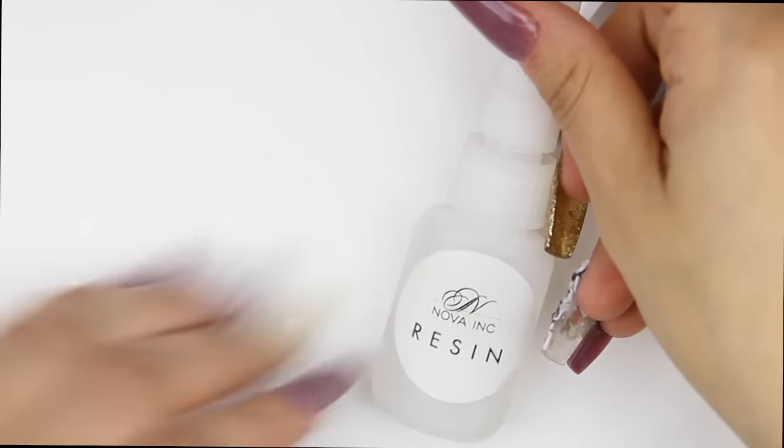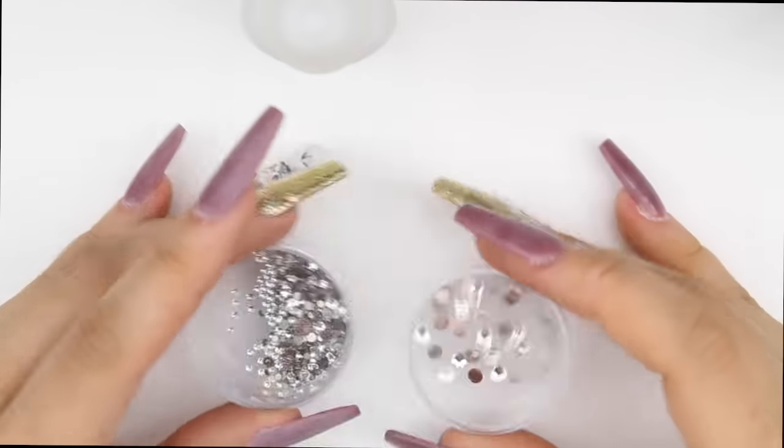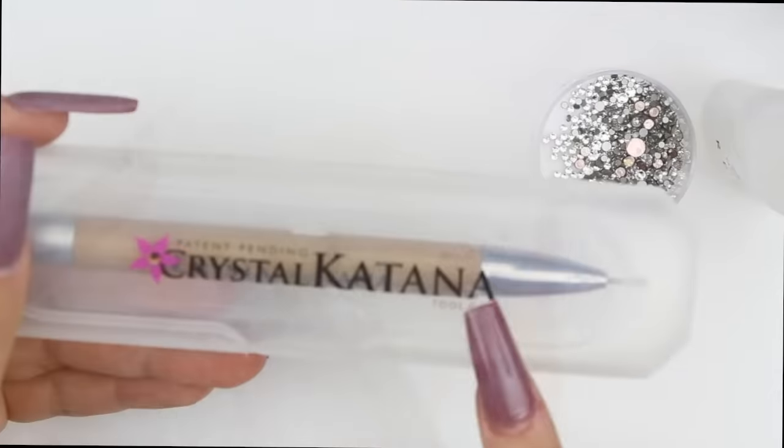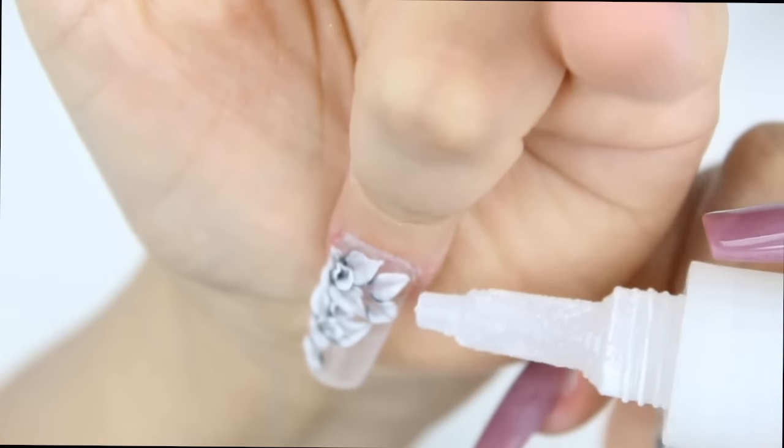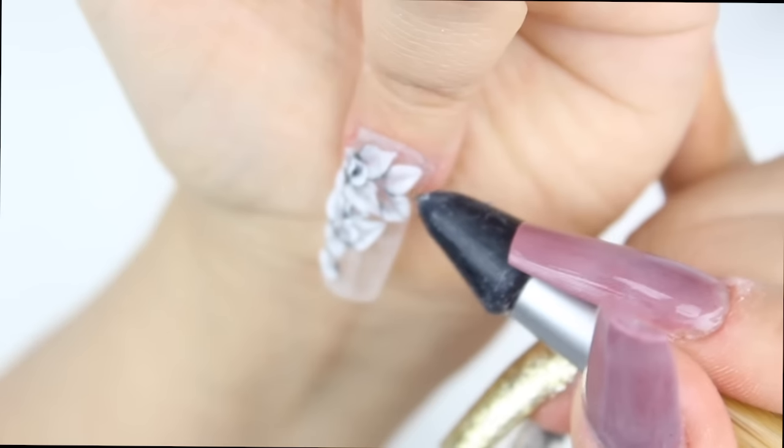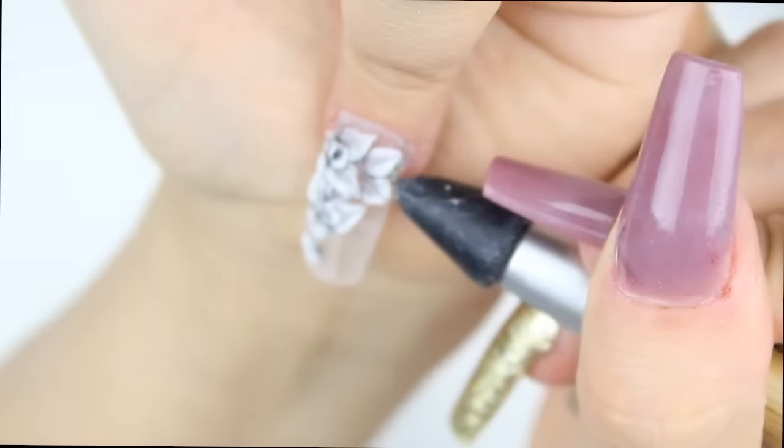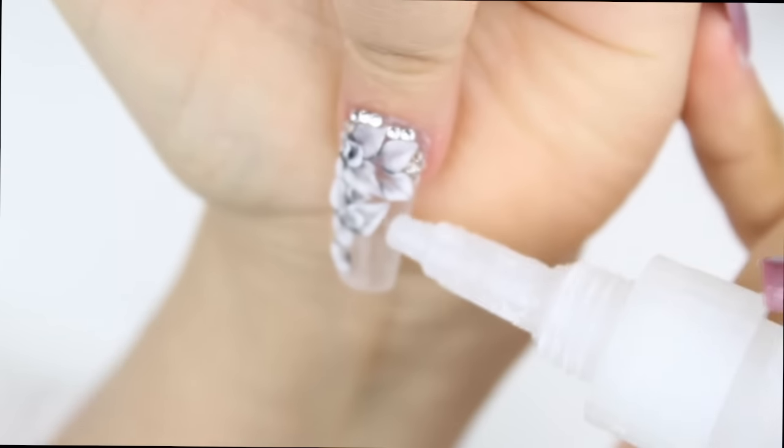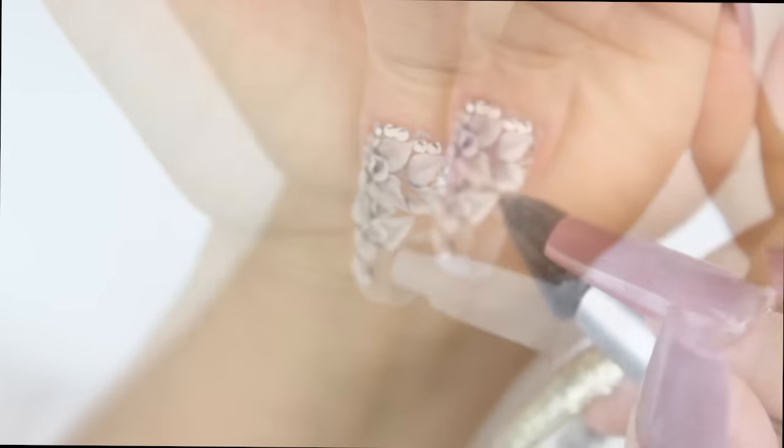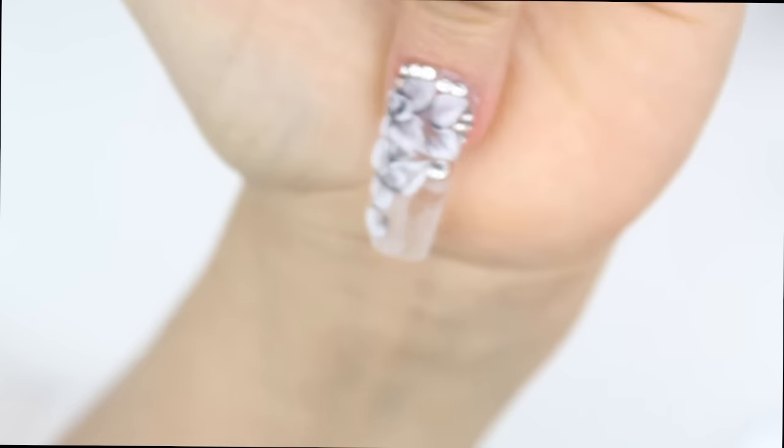Now I'm gonna adhere these clear Swarovski rhinestones on the nail with my crystal katana and Nova Inks resin. I was gonna fill up the whole nail but I didn't. I just went halfway with it and left the tip clear. I really liked the way it looked.